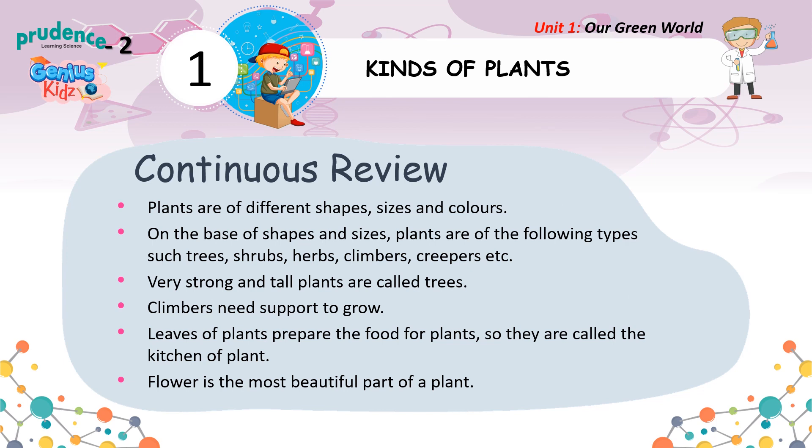Plants are of different shapes, sizes and colors. On the basis of shapes and sizes, plants are of the following types: trees, shrubs, herbs, climbers, creepers, etc. Very strong and tall plants are called trees. Climbers need support to grow. Leaves of plants prepare the food for plants, so they are called the kitchen of the plant. Flower is the most beautiful part of a plant.